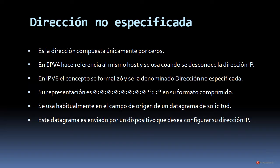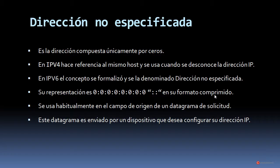Finalizamos el estudio de las direcciones IPv6 con la dirección no especificada, compuesta únicamente por ceros. En IPv4 hacía referencia al mismo host y se utilizaba cuando se desconocía la dirección IP. En IPv6 el concepto se formalizó y se la denominó dirección no especificada. Su representación es 8 bloques de ceros, o :: en formato comprimido. Se utiliza habitualmente en el campo de origen de un datagrama de solicitud enviado por un dispositivo que desea configurar su dirección IP.